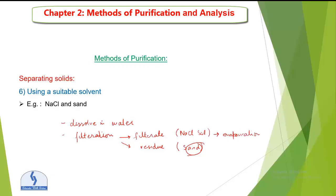To recover NaCl from the solution, we use evaporation — heating the salt solution on an evaporating dish until we collect the salt. After evaporation we have collected NaCl, and we have already collected sand. Note: you must select a solvent in which only one component is soluble, so you cannot take a solvent in which both NaCl and sand dissolve.